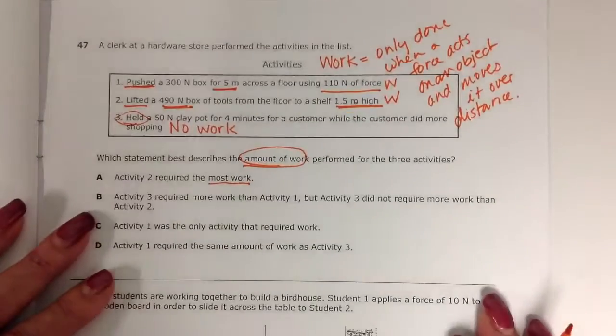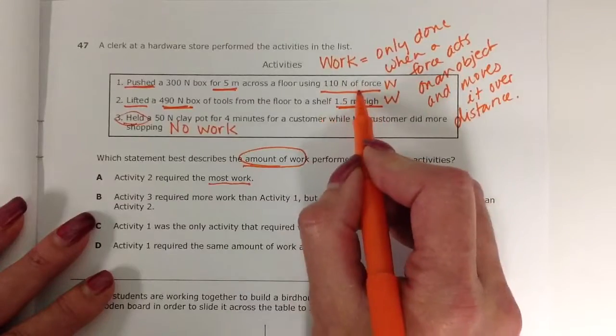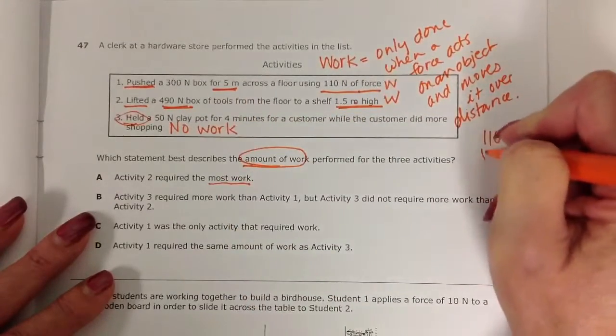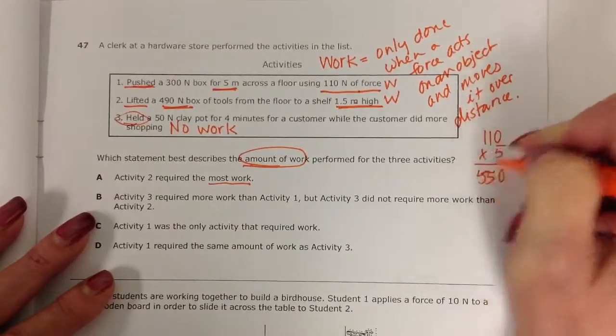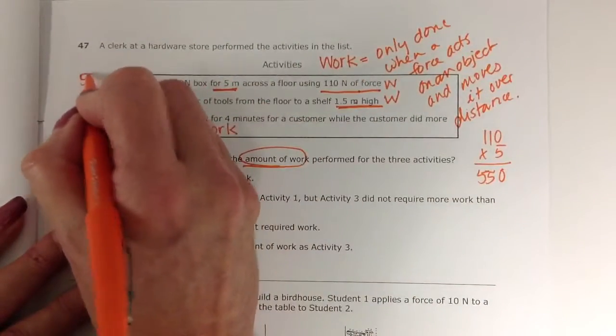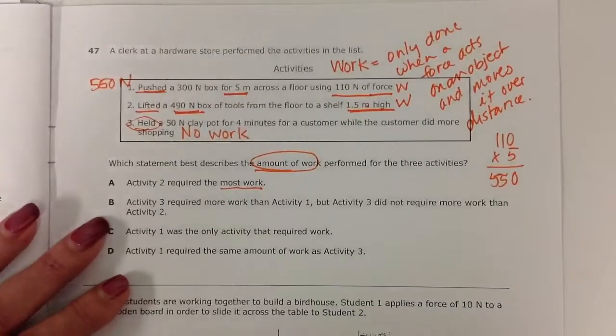For number one, I have 5 meters of force for 110—excuse me—110 newtons of force over a distance of 5 meters. I'm going to multiply those, and I get 550 newtons. 550 newtons for one.